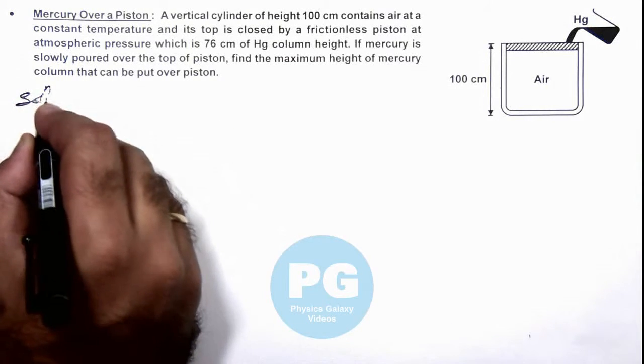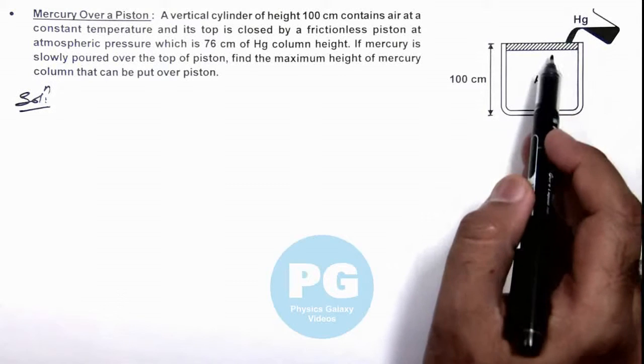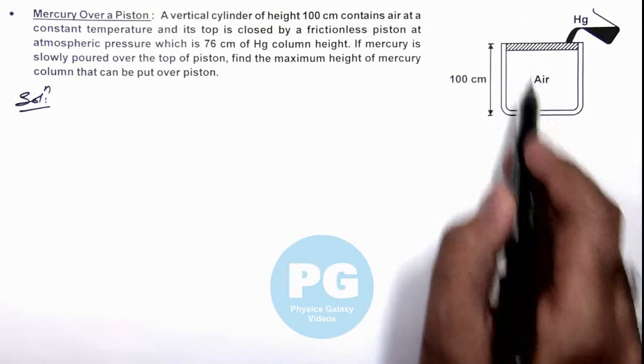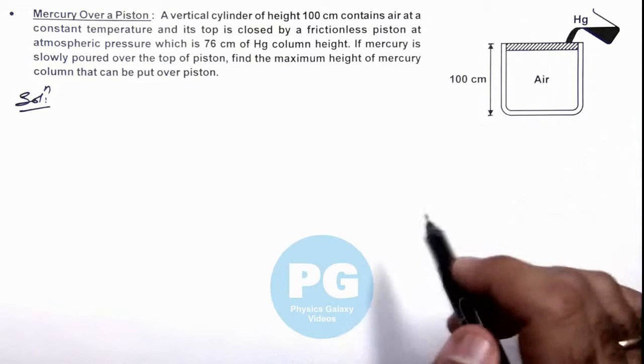Here we can analyze that as mercury is poured over the piston, due to the weight of this mercury and atmospheric pressure, the piston will move down and the volume of air decreases.